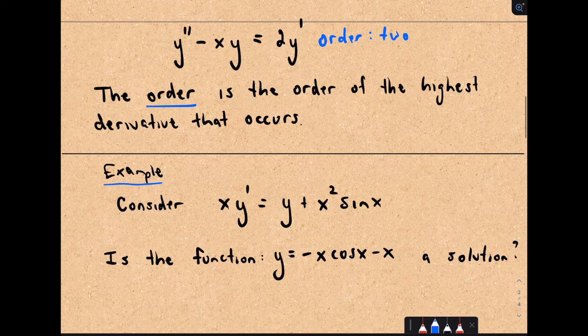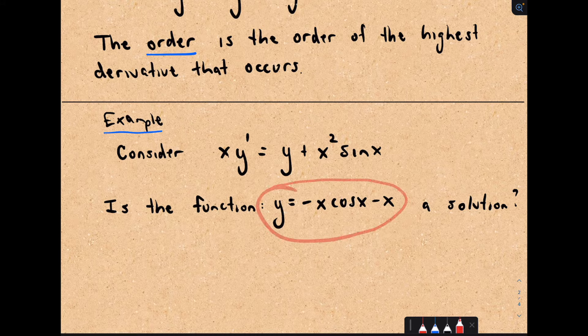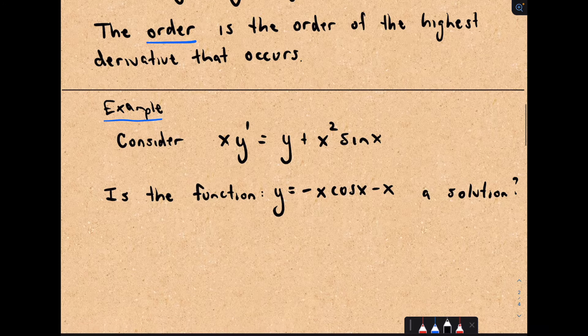So let's look at an example here and what it means to be a solution. I've got this equation: x times y prime equals y plus x squared times sine x. We're trying to figure out: is the function y equals negative x times cosine x minus x a solution? Let's just work it out and see. I can take the derivative, so y prime — the first part I'll have to use the product rule.